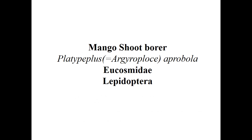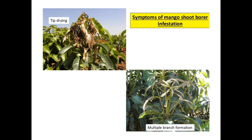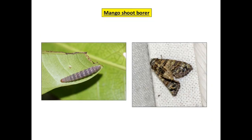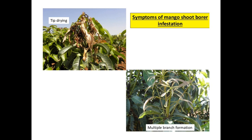Coming to mango shoot borer — Chlumetia transversa (otherwise called Argyroploce aprobola). Downward tunneling in terminal shoots is caused by a dark pink caterpillar with dirty spots. Abnormal stunting with bunchy appearance of terminal branches is seen under high severity. Larvae bore into young tender leaves during August; freshly hatched caterpillars bore into the mid-rib and after a couple of days bore into tender shoots near the growing point, tunneling downward and throwing excreta, resulting in dropping of leaves and wilting of terminal shoots.